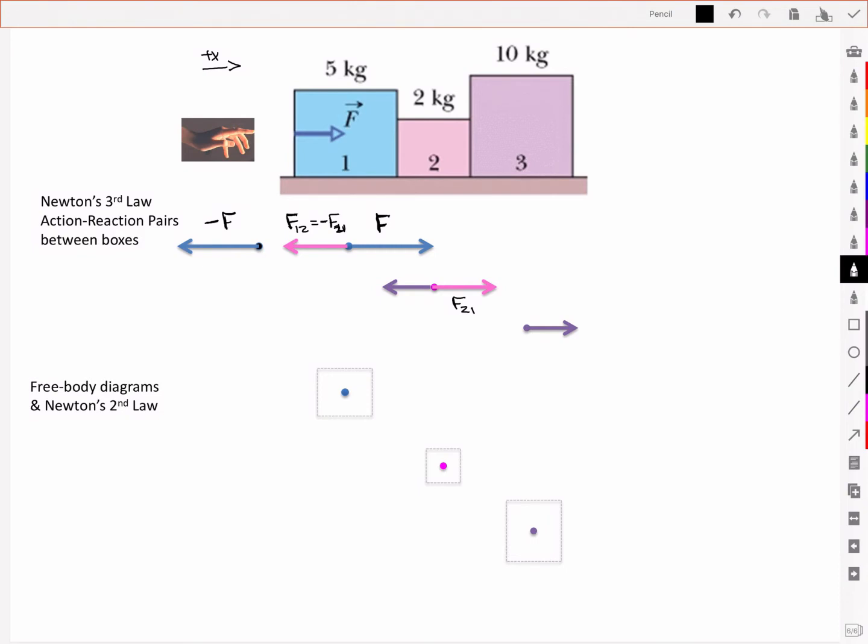And box number two goes on to then exert a force on box number three. And it exerts a reaction force on box number two, where it now is in the opposite direction but equal in magnitude to F32. And so we have this series of forces and action-reaction pairs.